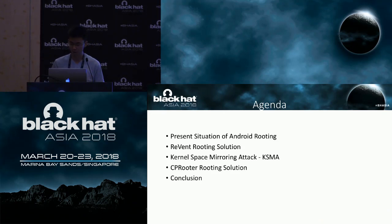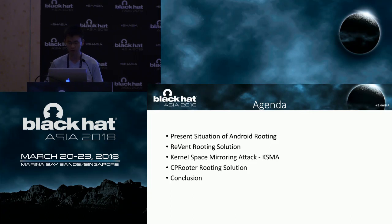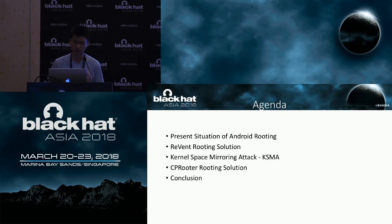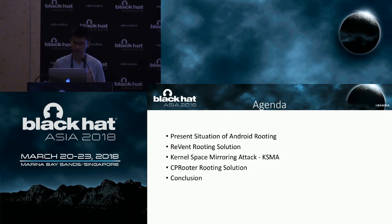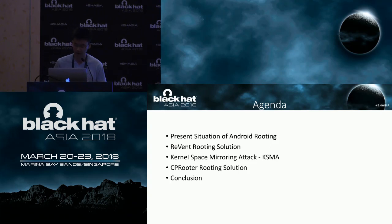For today's agenda, I will first briefly describe the present situation of Android rooting — rooting the newest Android devices is becoming more and more challenging. Then I will detail a new rooting solution, Revent, for Android 7, although public exploitation techniques work well. However, this cannot cover Android 8 due to new mitigations. Next I will introduce a new kernel exploitation technique named the Kernel Space Mirroring Attack, short for KSMA — an awesome technique which enables an attacker to access the kernel virtual address from user mode without any syscalls, making it very easy to bypass both PXN and PAN mitigations. Finally, I will detail a new root solution, CPU Router, based on a very interesting debug interface, and demonstrate how to construct a 100% reliable exploit chain using KSMA.